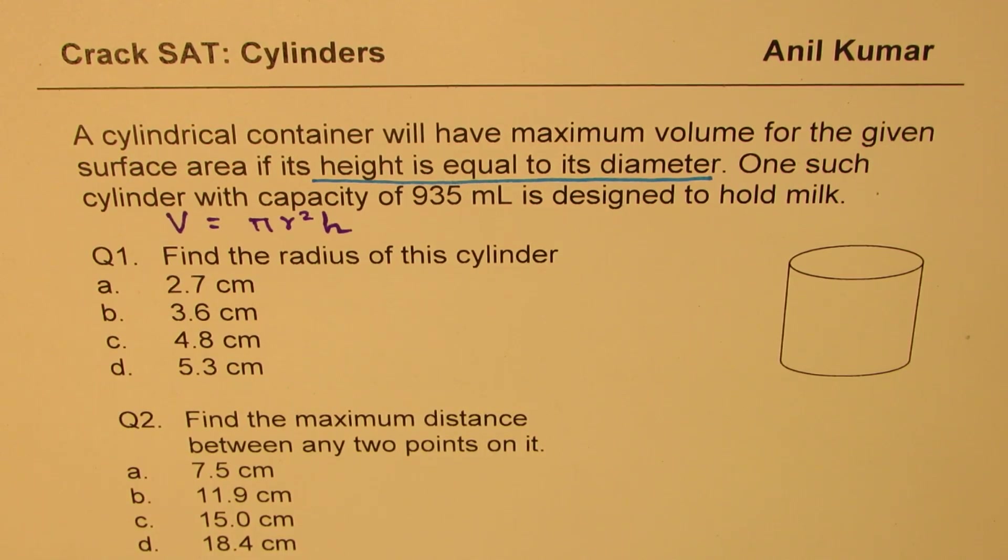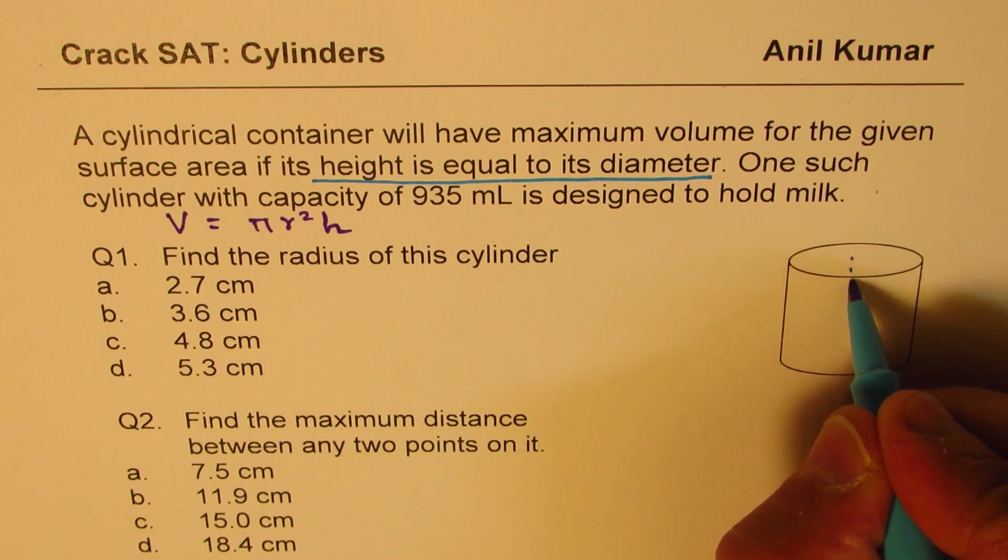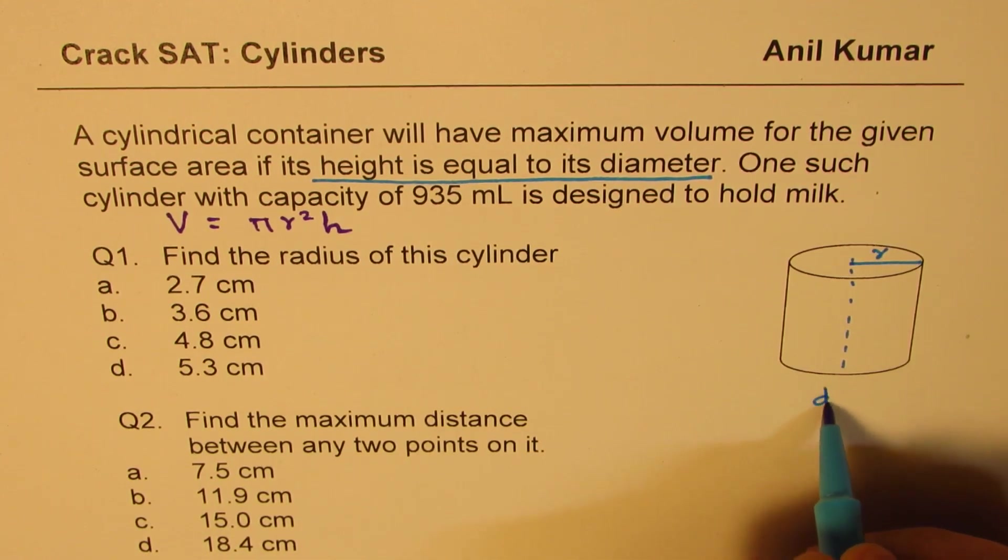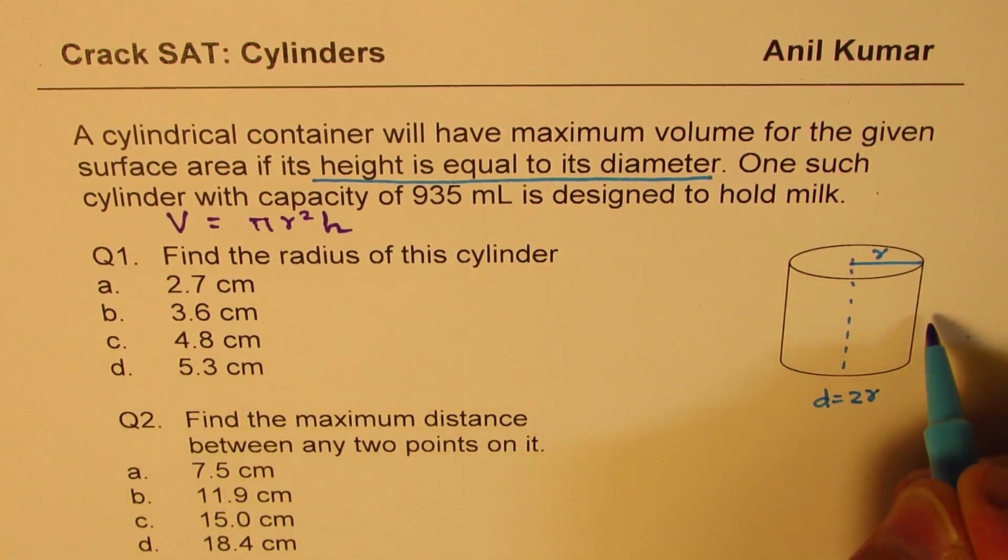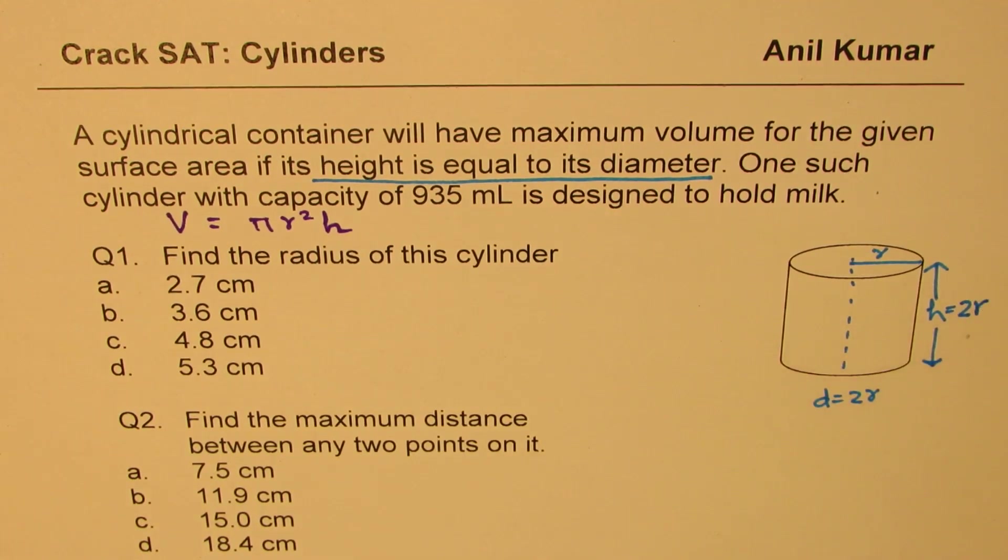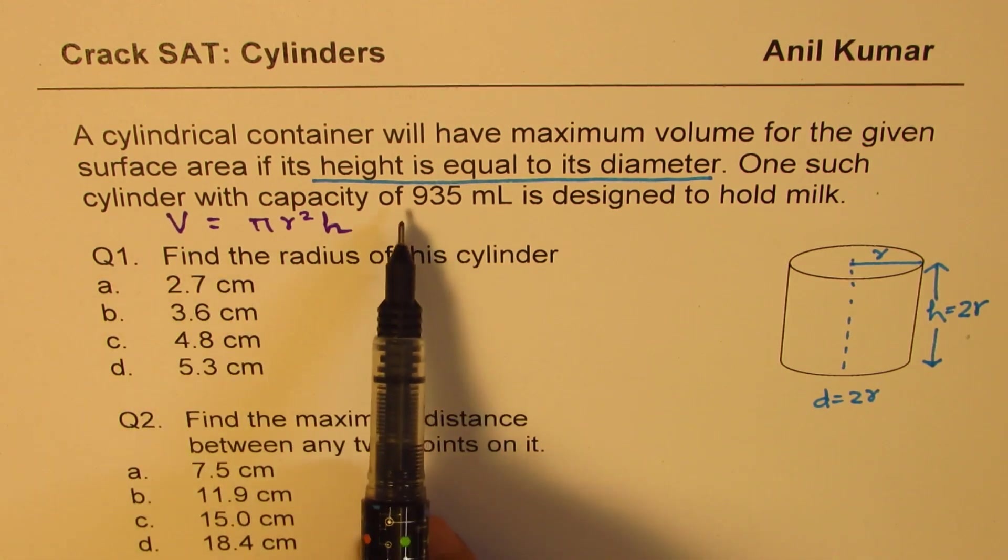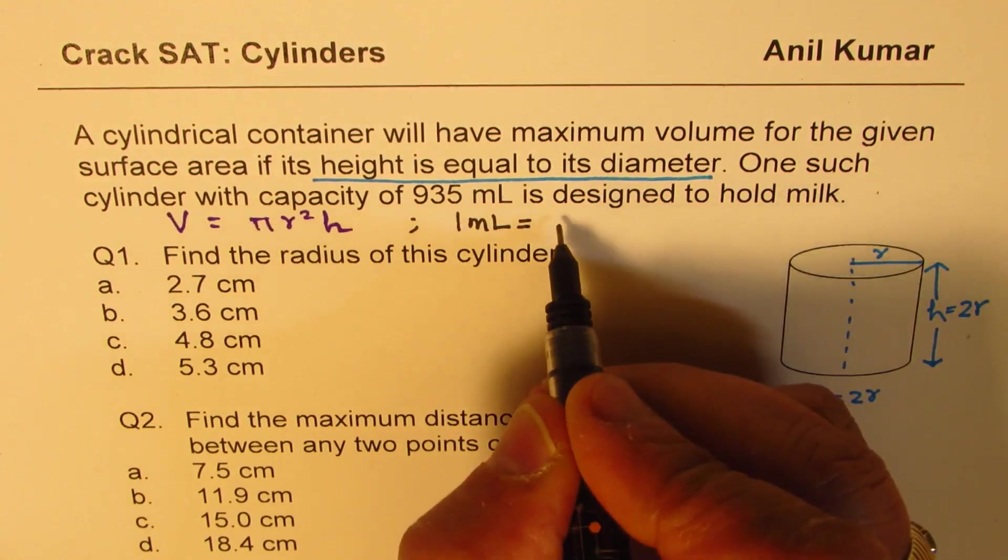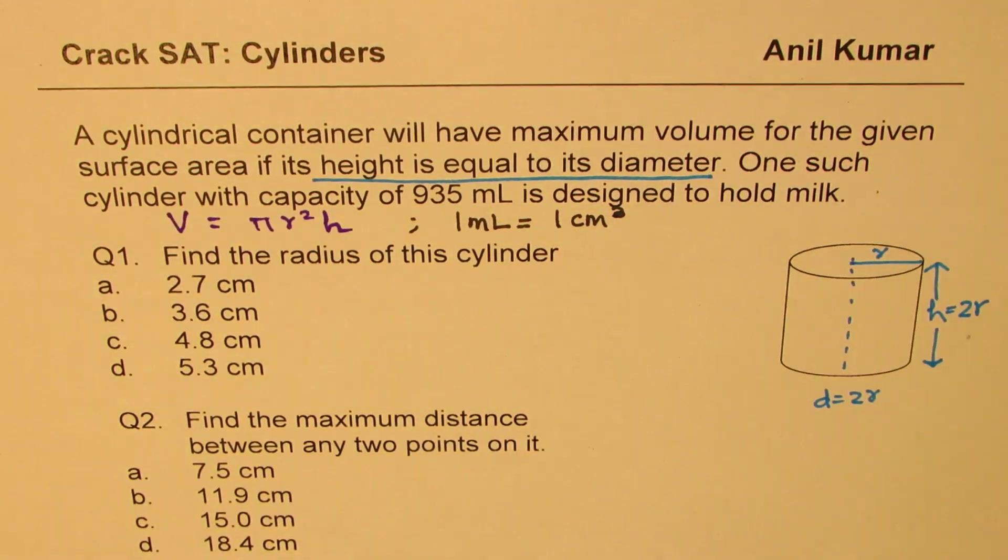I hope you understand the question. I'd like you to pause the video, answer, and then look into my suggestions. Okay, let's try to solve it. So this is the cylinder. Let's assume that the radius is r. In that case, the diameter d will be 2 times r, and height is equal to 2 times r. So if I write height in terms of radius, then we have simpler calculations to make. We know that volume is 935 milliliters. Well, you should also know that 1 milliliter is equal to 1 centimeter cube.